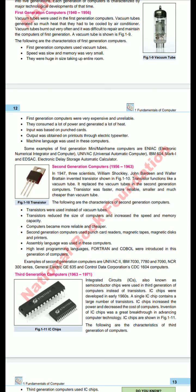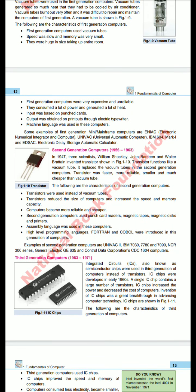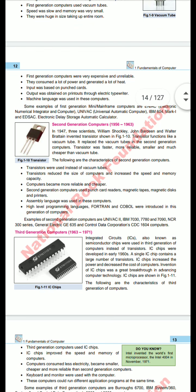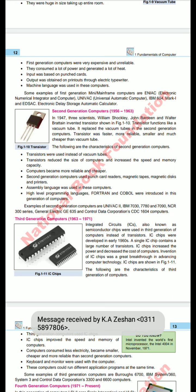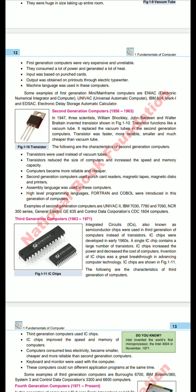The second generation time period is 1956 to 1963. In 1947, three scientists — William Shockley, John Bardeen, and Walter Brattain — invented the transistor. The transistor functioned like a vacuum tube but replaced it in second generation computers. Transistors reduced the size of computers, increased speed and memory, and made computers more reliable and cheaper, since vacuum tubes were very expensive.